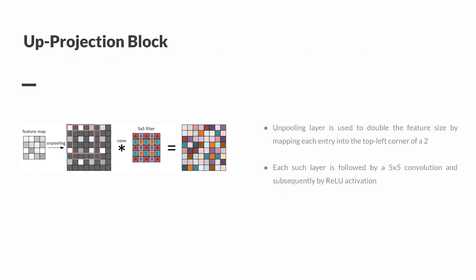The second part is a bunch of up-projection blocks, which are used to recover the features back to the original resolution. The up-projection block is one of the most important parts in this project. We use the unpooling layer to double the feature size, which is followed by a 5x5 convolutional layer and ReLU activation function.